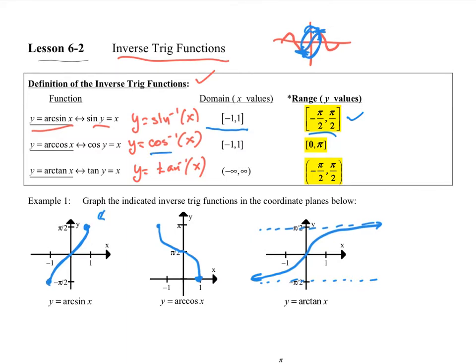Inverse cosine is handled in a similar manner, except we range it from 0 to π, because going from 0 to π on the cosine is strictly decreasing. Then the inverse tangent, from negative π/2 to π/2, gives us this graph. The inverse tangent has a different domain than the other two because it takes on all values, but the range is limited so we never hit negative π/2 and π/2. Those are the inverse functions and their graphs.